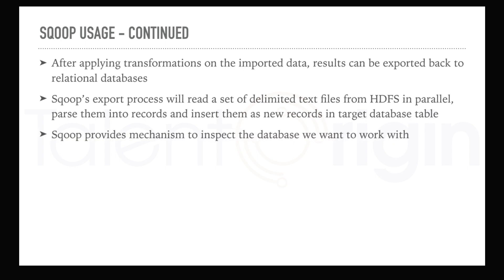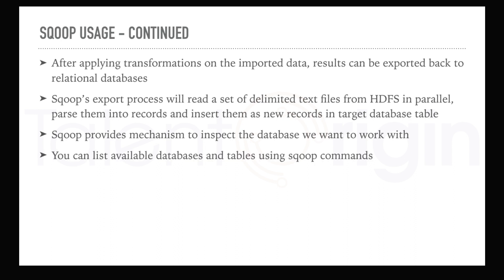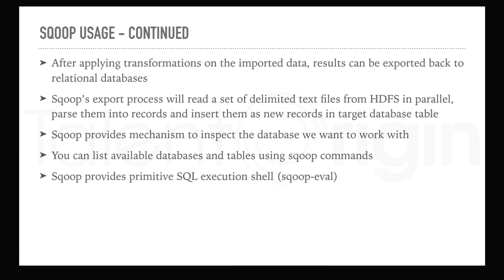Sqoop provides a mechanism to inspect the database you want to work with. For example, if you have a connection URL for your database but don't know what databases or tables are available, Sqoop lets you list the tables or list the databases available in that particular RDBMS system. Sqoop also provides a feature to evaluate or run a query using Sqoop Eval. Using Sqoop Eval you can run any query and see the result in the shell — it functions like a SQL execution shell.